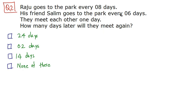Moving on to question two: there is a person Raju who goes to the park every eight days, and he has a friend Salim who goes to the park every six days. They meet each other one day, and the question asks how many days later will they meet again.